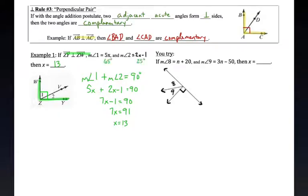And then we get X is equal to 13. If I plug in 13, I would get that angle one is actually equal to 65 and angle two ends up equaling 25, which of course add up to equal 90. Perfect.